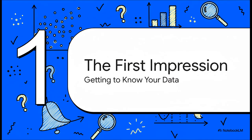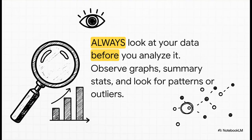So where do we even start this whole journey? It's not with some crazy complicated math. Before we ask any big questions, we have to just get to know our data — kind of like a first impression. We need to understand its basic personality. This first step is the foundation for everything that comes next. The golden rule of data: before you do anything fancy, you have to look at your data. Really look at it. Make a graph. Scan the numbers. Are there any obvious patterns? Anything that looks weird, like a number that's way off from everything else? This first gut check is going to guide every single decision you make from this point on.